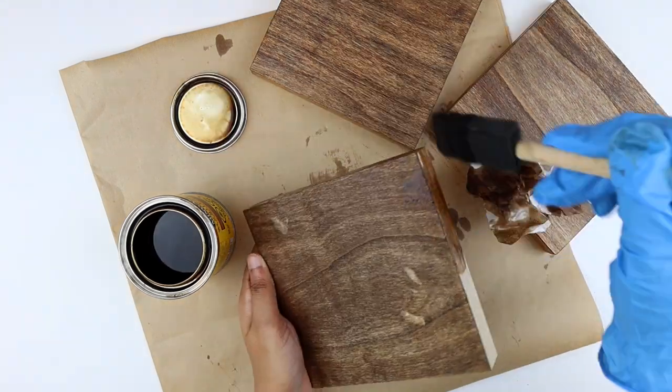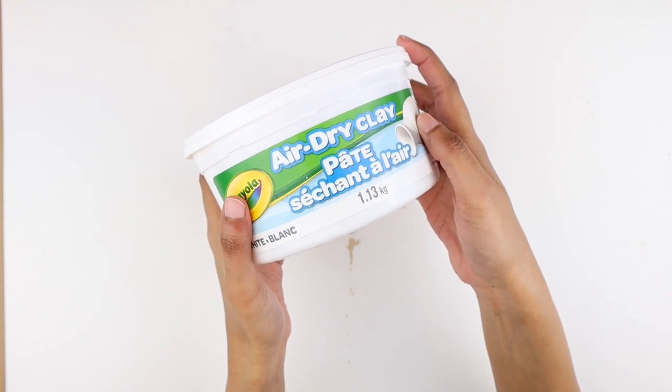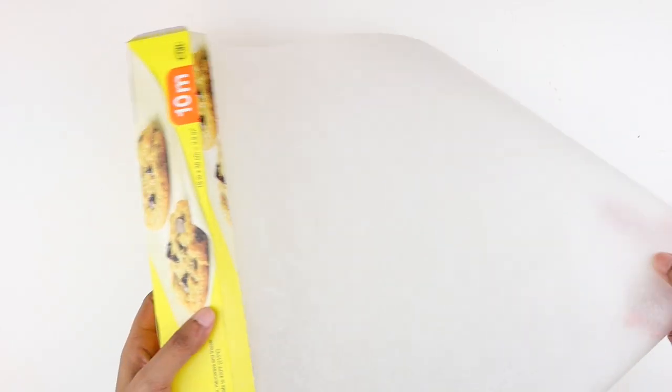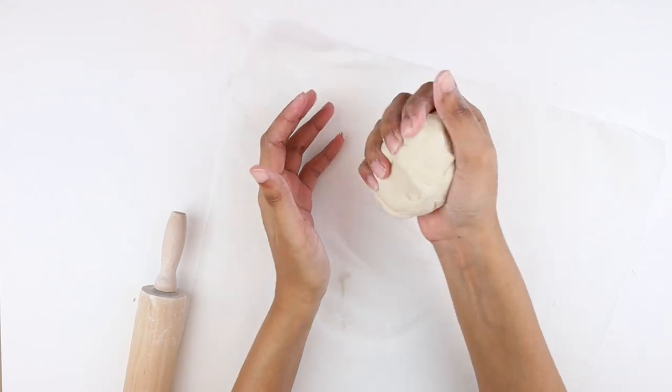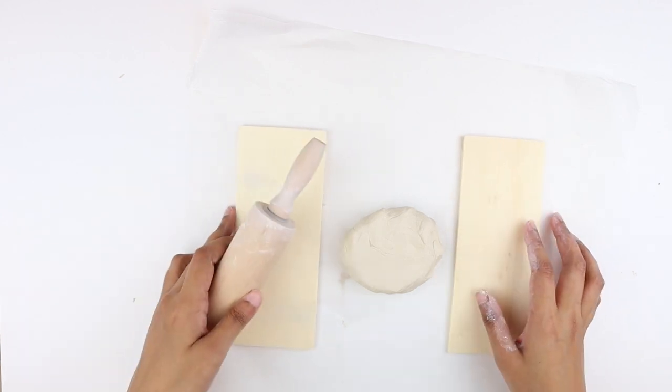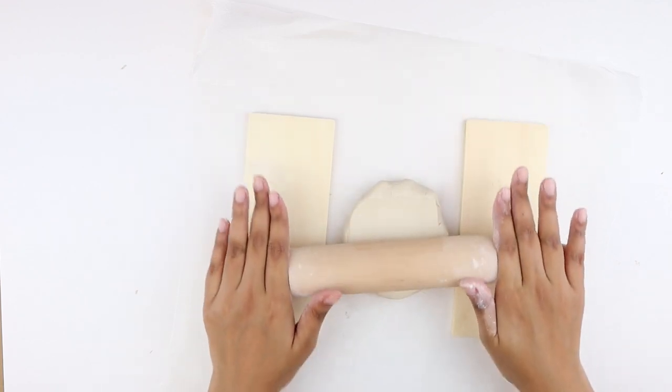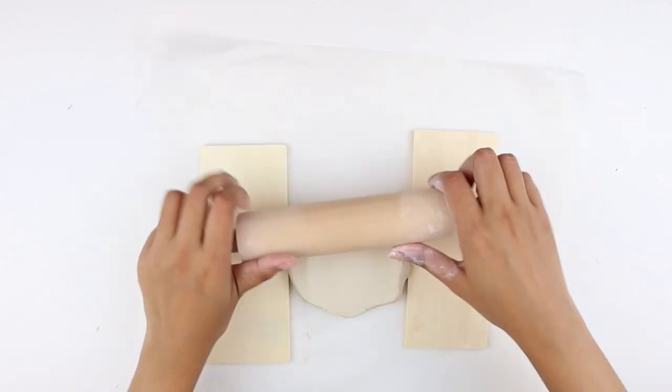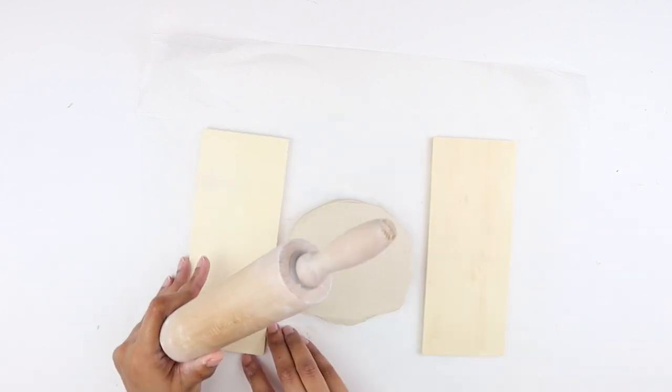Next I took my tub of air dry clay and laid down some parchment paper so the clay won't stick to the table. I grabbed quite a big chunk of clay and kneaded it for a few minutes to make it more malleable. Then I placed the chunk of clay between two wooden planks and started to roll it out. This step is optional. I use the wooden planks to make sure the clay is rolled out evenly and the thickness is uniform throughout the edges.